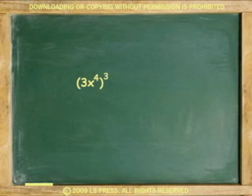Another example. Here, all the contents of the parentheses are raised. 3 is cubed, and so is the exponent 4. 3 cubed is 27, and x to the 4th cubed is x to the 12th.